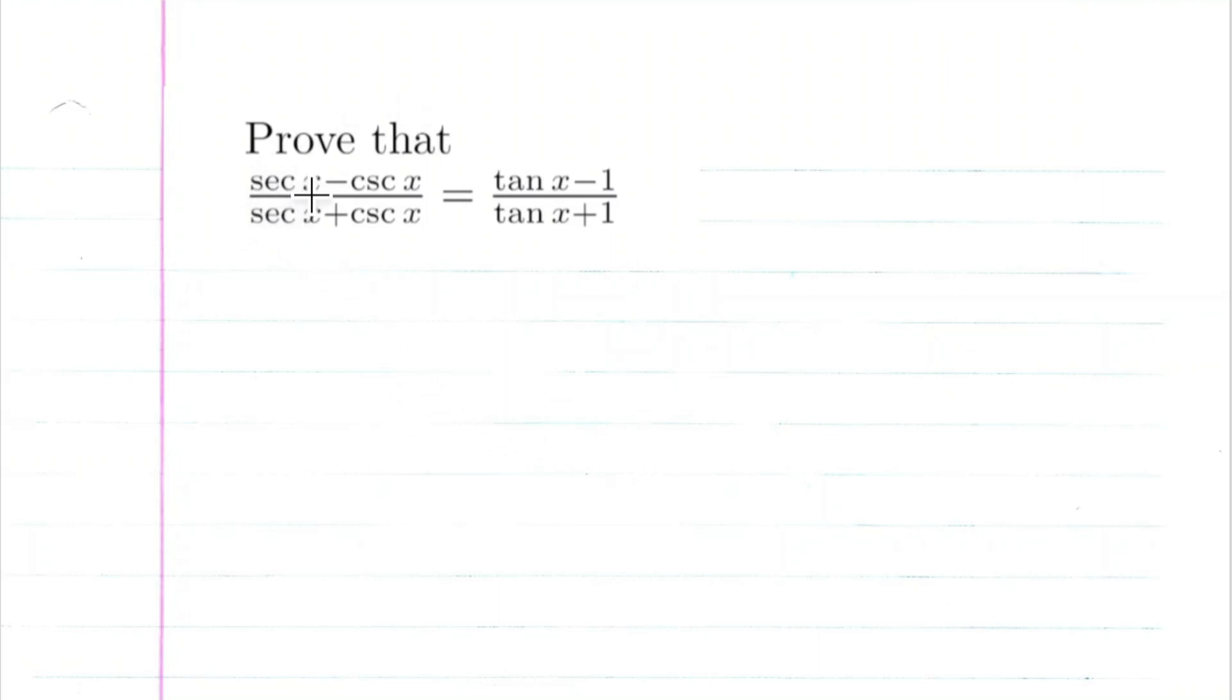We're going to prove that the secant of x minus cosecant of x over secant x plus cosecant of x is equal to tangent x minus 1 over tangent x plus 1.